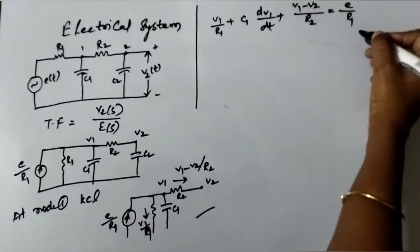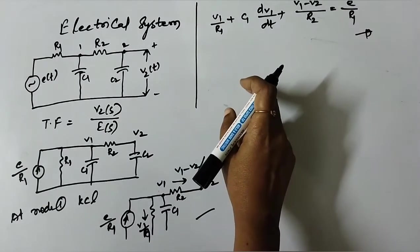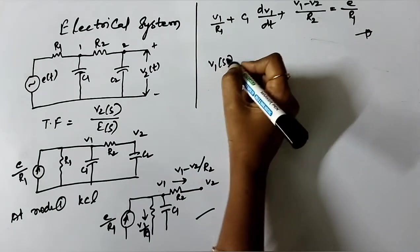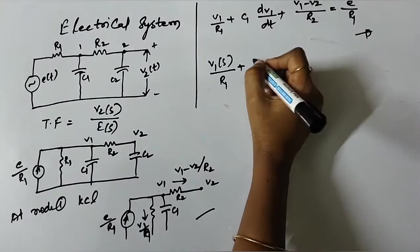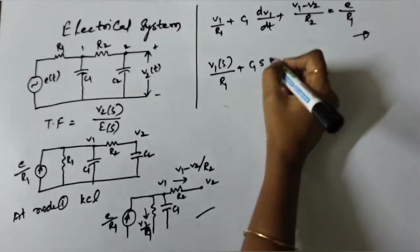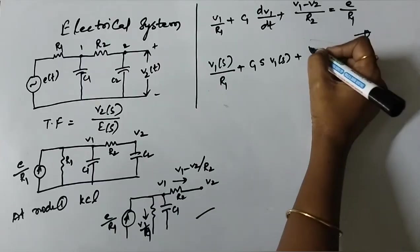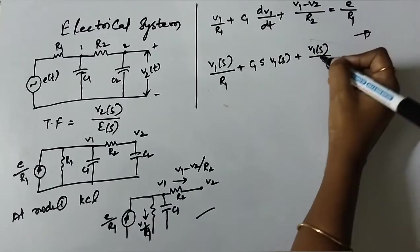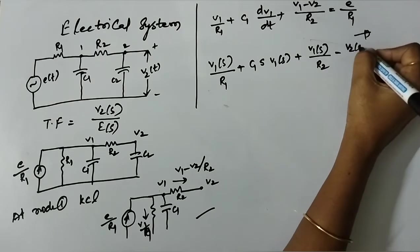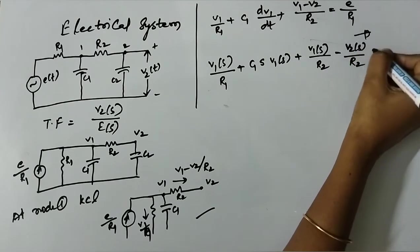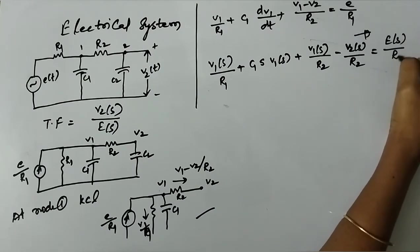Now converting to the S-domain: V1(S)/R1 + C1·S·V1(S) + V1(S)/R2 − V2(S)/R2 = E(S)/R1.